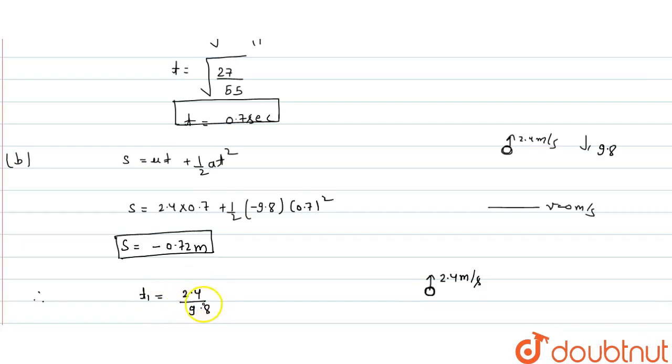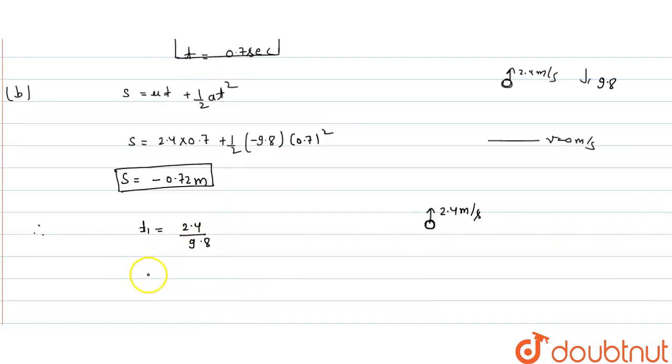Directly we take time t1. Initial velocity 2.4 whole upon 9.8. Velocity equals displacement upon time, time equals velocity upon acceleration.